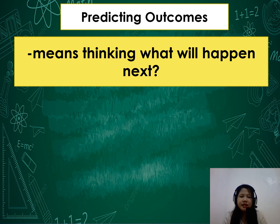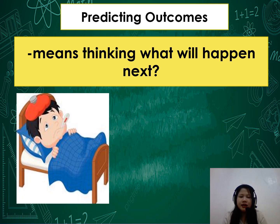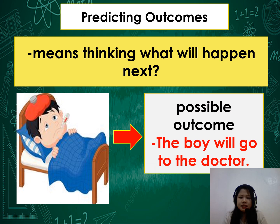Predicting outcomes means thinking what will happen next. For example, on this picture — what do you think will happen next? The possible outcome is the boy will go to the doctor. When the boy is sick and does not feel well, the possible outcome is the boy needs to go to the doctor to be cured.